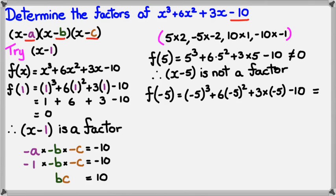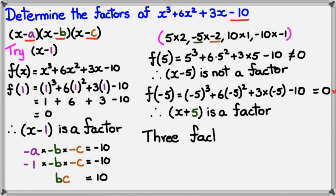Now, this actually equals to 0, which means -5 times -2 is equal to 10. So because f(-5) is equal to 0, I can say that x+5 is a factor. So if x+5 is a factor, the other factor must be x+2. The three factors are x-1, x+5, and x+2.